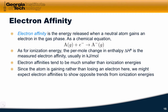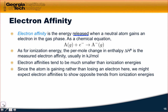Electron affinity is defined as the energy released when a neutral atom gains an electron in the gas phase. This idea of 'released' is very important. When we add an electron to an atom to form an anion, there is energy that is released. Energy is a product of this process, and the reason for that is the Coulombic attraction between the negatively charged electron and the positive nucleus.